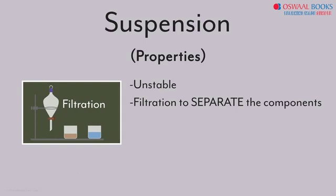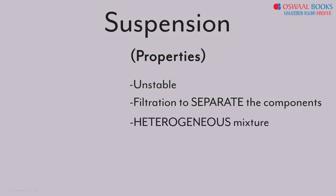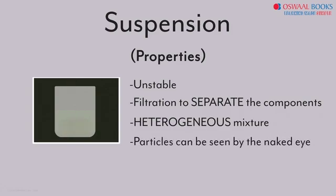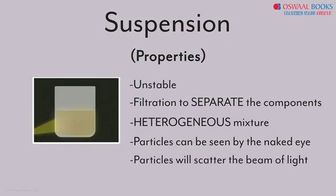In a nutshell, a suspension is a heterogeneous mixture. When a solute is mixed to form a suspension, it forms a cloudy mixture like the muddy water in our example. But when such mixtures are allowed to stand undisturbed, they will eventually settle down, and the particles of the solute can be seen by the naked eye. What if we pass a beam of light through it? As it is a heterogeneous mixture, the particles of a suspension will scatter the beam of light passing through it.